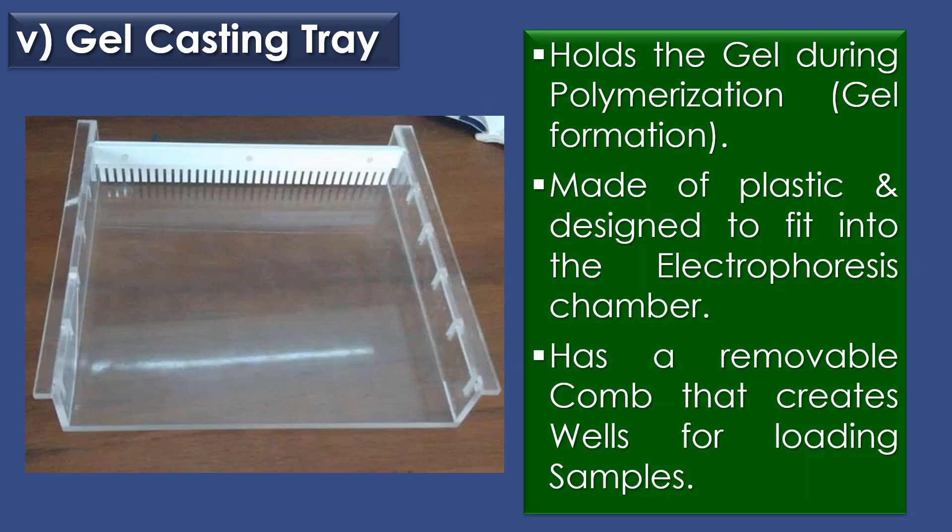The fifth component is gel casting tray. Gel casting tray holds the gel during polymerization or gel formation. It is usually made of plastic and designed to fit into the electrophoresis chamber. The gel casting tray often has a removable comb that creates wells for loading samples.